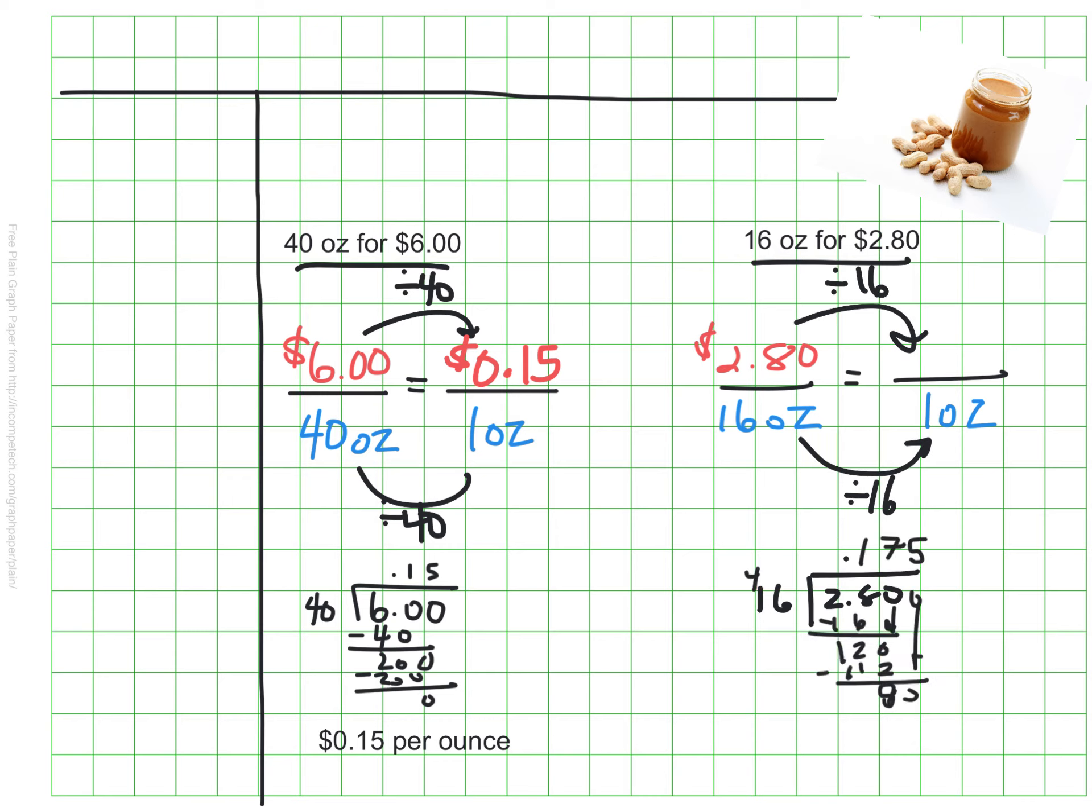My calculation here turns out that each of these ounces is going to cost approximately 18 cents. It ends up being 17 and a half cents. But in money, we don't go past our penny. So I'm going to round that to 18 cents for each ounce.